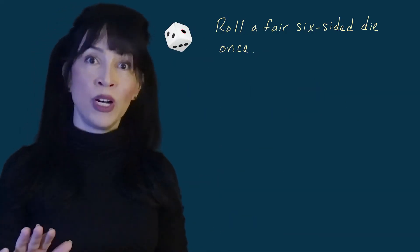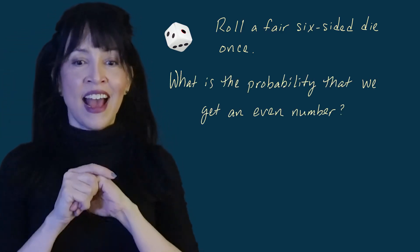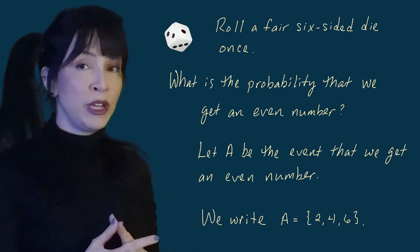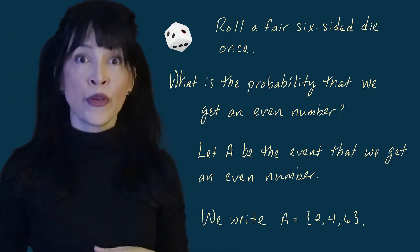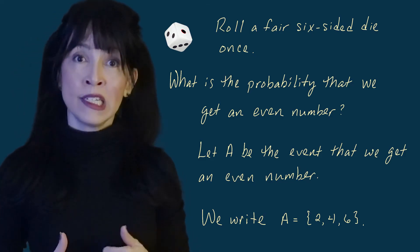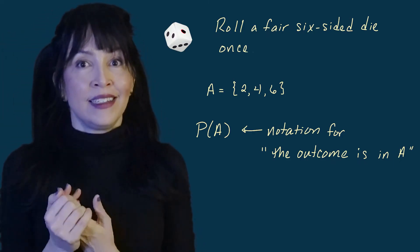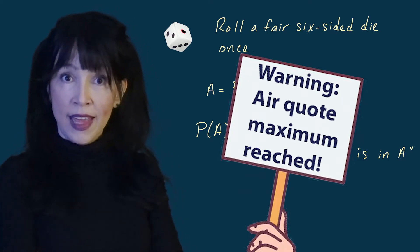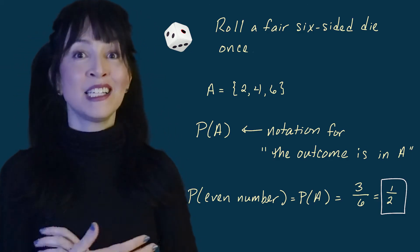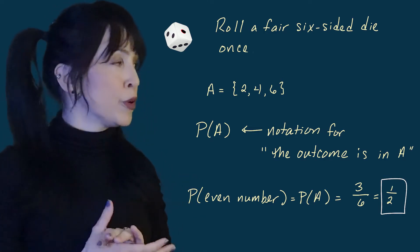Let's go back to the die — one roll, still fair, still six-sided. I want the probability we get an even number. I'll let A be the event we get an even number, so A = {2, 4, 6}. The probability that A happens means the probability that one of the outcomes in A has occurred. There are three even numbers out of a total of six, so P(A) = 3/6, which reduces to one half.